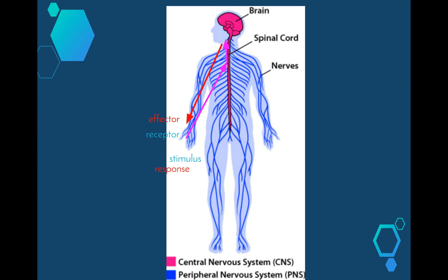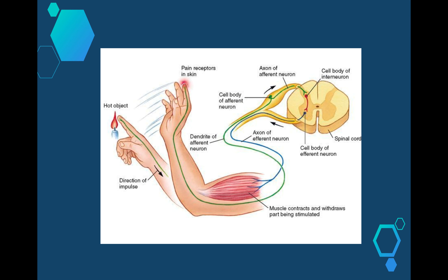The central nervous system then sends more impulses along different nerves to effector organs to carry out the response. Effectors are usually muscles or glands. In the example of touching a hot plate, the withdrawal of the hand is a response triggered by the central nervous system — nerve impulses are sent along nerves to the muscles of the arms, which are the effectors, causing them to contract and withdraw the hand from the heat. Another example is the response to a loud knock at the door, which is a stimulus causing you to look up, which is your response.